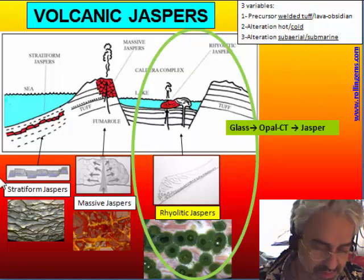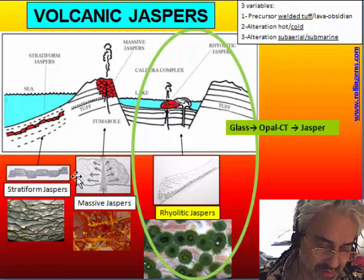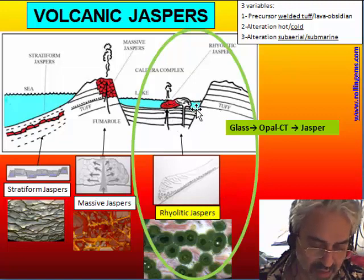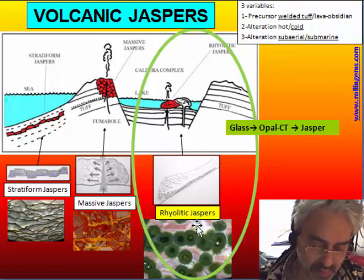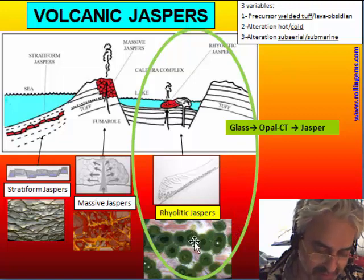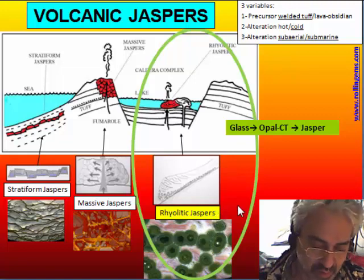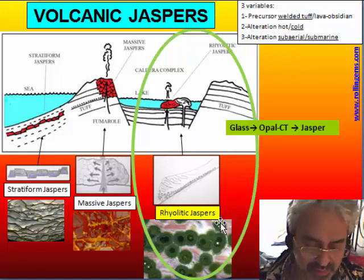We have seen two groups of jasper: one is the result of alteration of tuff, and rhyolitic jasper that are mostly alteration of a rhyolitic volcanic body. Thunder eggs are a variety of rhyolitic jasper with the same origin — vitrification of glassy lava, vitrification of obsidians — but in the form of a nodule.